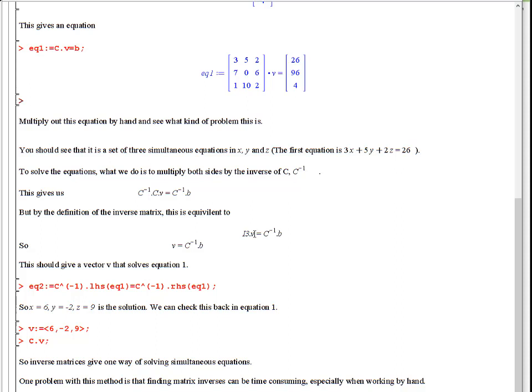But because of what we know about the identity matrix, identity matrix times v is just v. So by multiplying by c minus 1, that completely clears the left-hand side of the equation, and you're left with v, which is the answer x, y, z. And on the right-hand side you have the thing you need to calculate to find what that is.